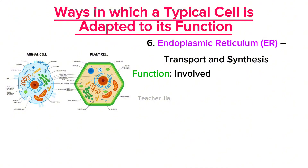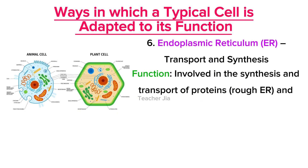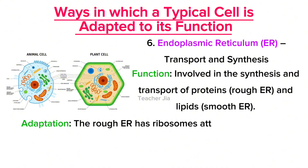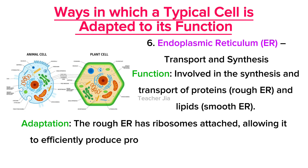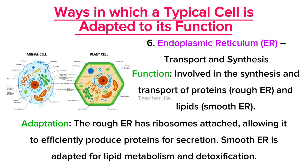Next is the endoplasmic reticulum, which majorly involves transport and synthesis. Its function involves the synthesis and transport of proteins in the rough endoplasmic reticulum, and transport of lipids in the smooth endoplasmic reticulum. In adaptation, the rough endoplasmic reticulum has ribosomes attached, allowing it to efficiently produce proteins for secretion, while the smooth endoplasmic reticulum is adapted for lipid metabolism and detoxification.